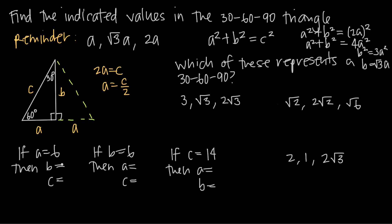The length of the longer side is always going to be √3 times the shorter side, so B = 6√3. And the length of the hypotenuse C is always going to be 2 times the shorter side, so C = 6 × 2 = 12. Just like that, we have the three side lengths of this 30-60-90 triangle.